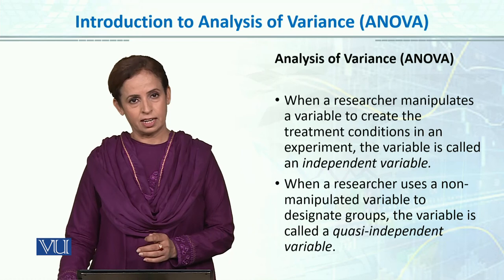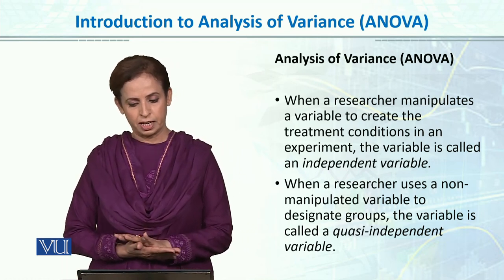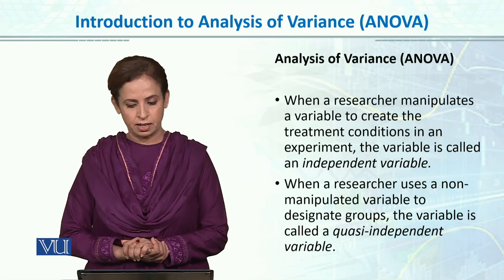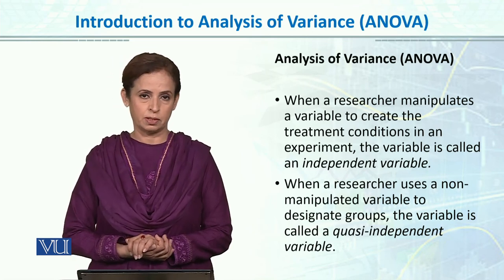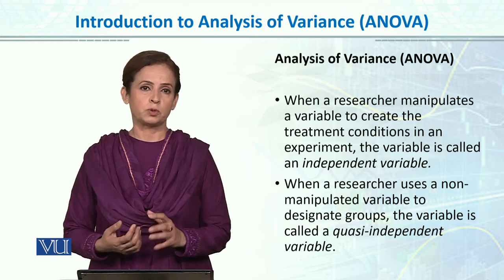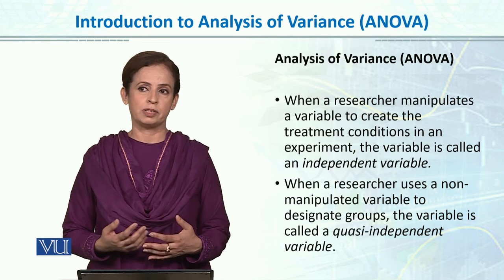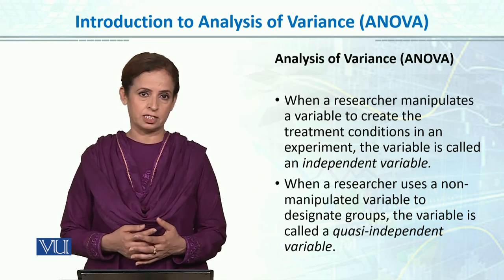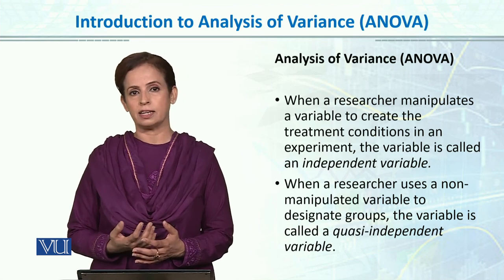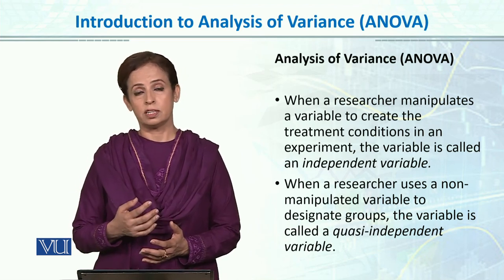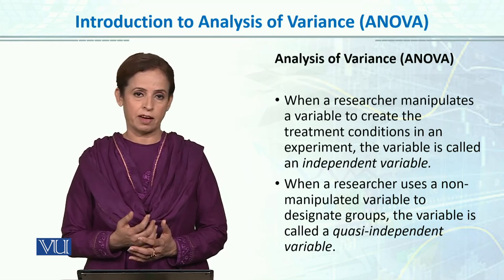Let's talk about this in detail with an example. When a researcher manipulates a variable to create a treatment condition in an experiment, that variable is called the independent variable. For example, let's look at driving performance and mobile phone use. The researcher is manipulating the variable, which is the use of the telephone during driving.